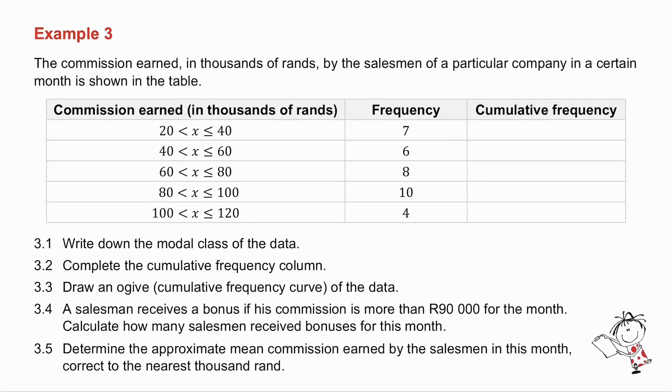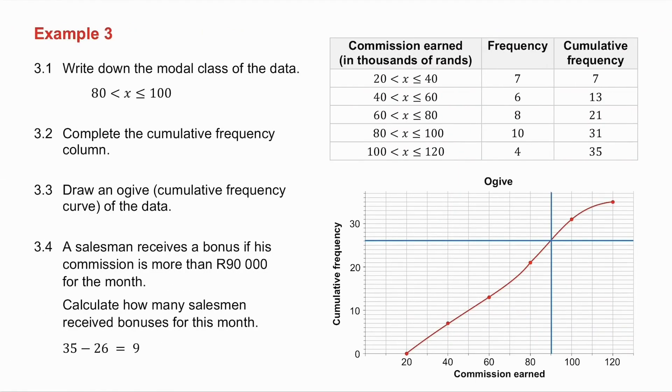Example number three. I want you to pause the video, I want you to try this yourself, and then we will do it together. The first question is to write down the modal class. So I take the one that has the highest frequency, and it is 80 to 100. They then ask me to complete the cumulative frequency column. Remember that that frequency is just repeated there. I then take 7 plus 6, and I get 13. 13 plus 8, and I get 21, and so on. And remember the total of all the frequencies must be the final number you get.